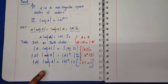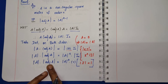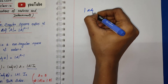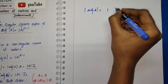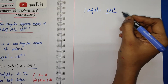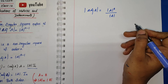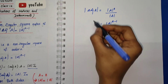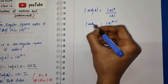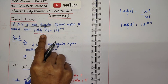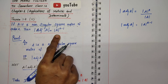Bringing determinant A to the right-hand side, we isolate determinant of adjoint A on the left. So determinant of adjoint A equals determinant A whole power n times 1, divided by determinant A. That simplifies to determinant A whole power n minus 1. Therefore, determinant of adjoint A is equal to determinant A whole power n minus 1.